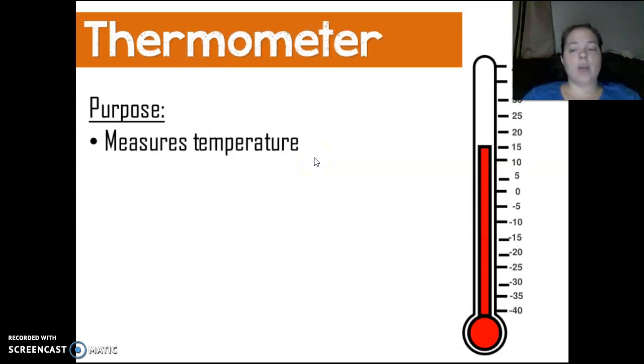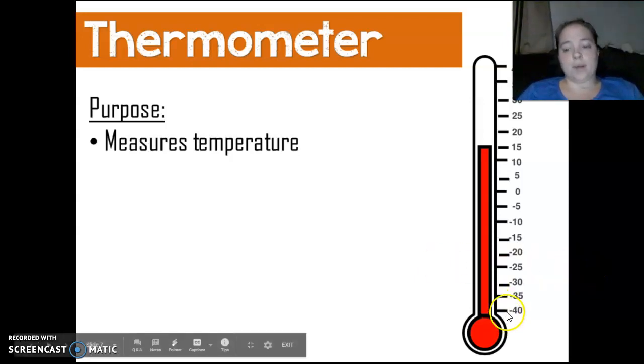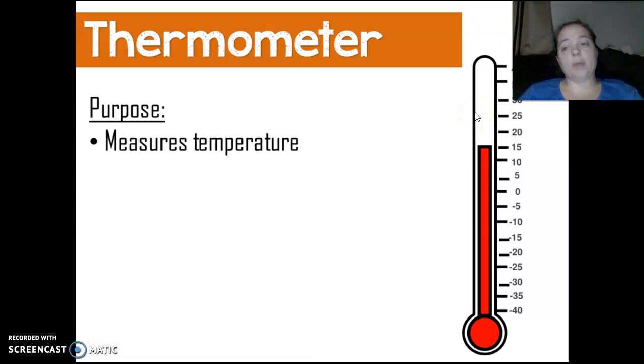A thermometer. It measures temperature. They can be in Celsius. They can be in Fahrenheit. Typically won't see one in Kelvin, but you have the numbers on the side to be able to measure. And you usually see the red liquid inside. You don't see mercury anymore because it's dangerous. So, no more mercury.